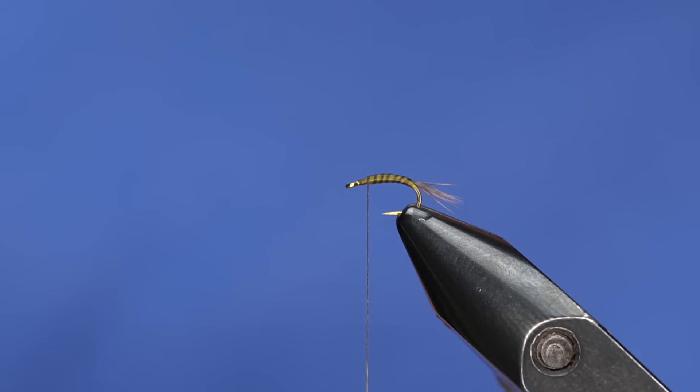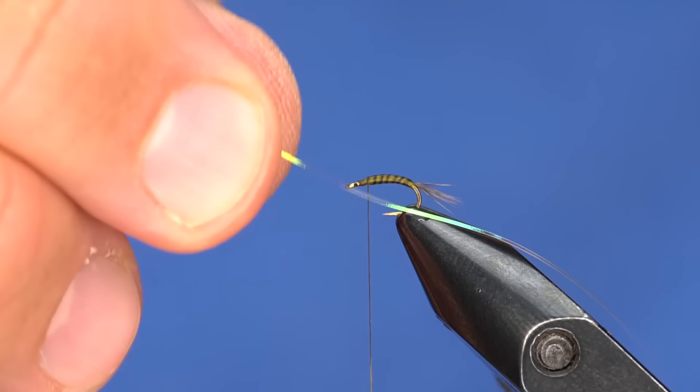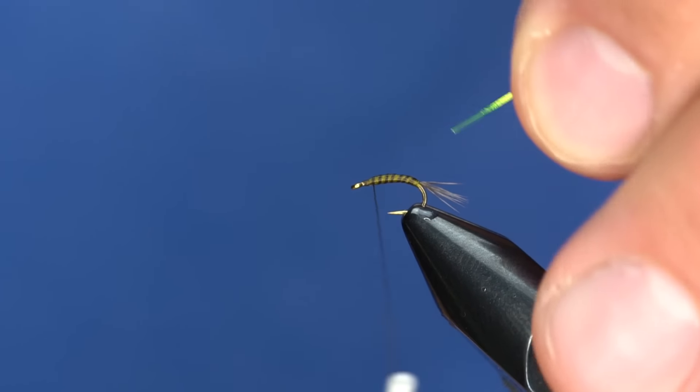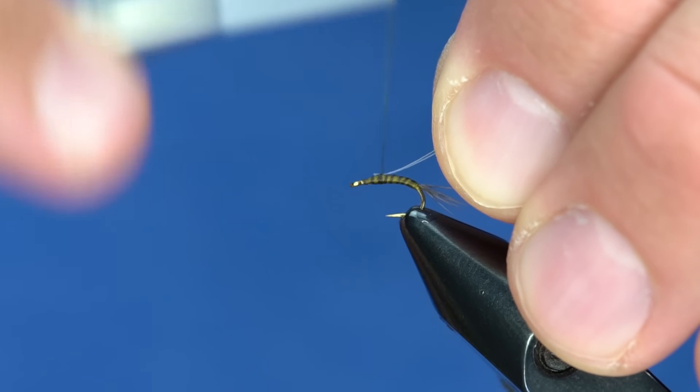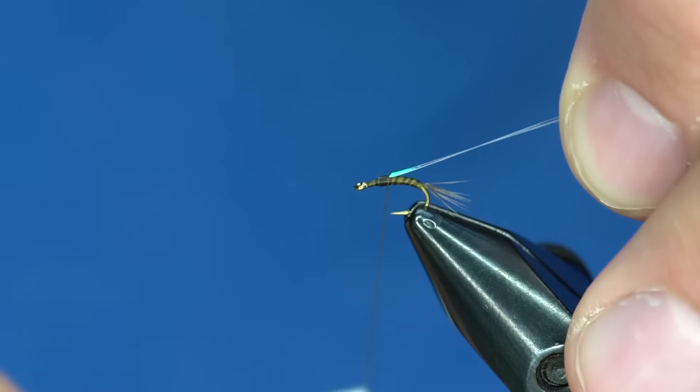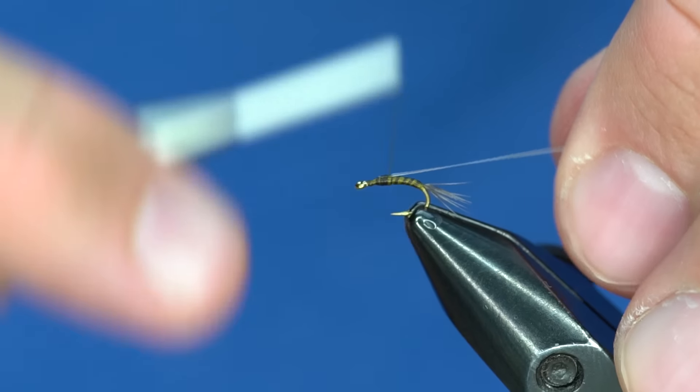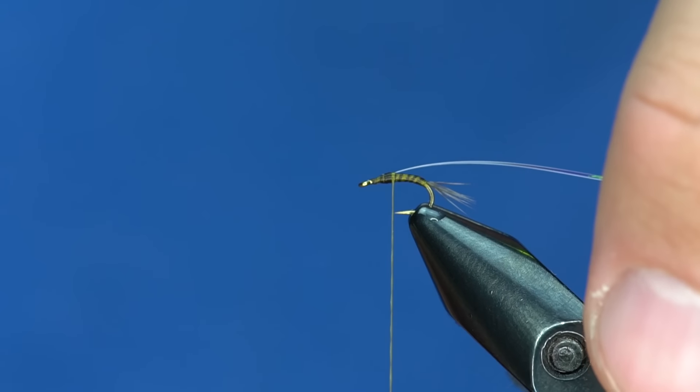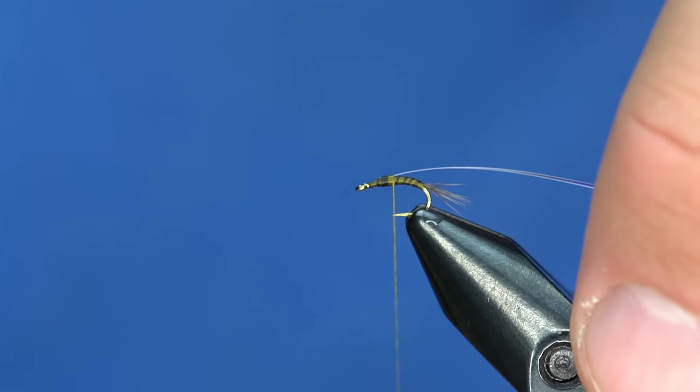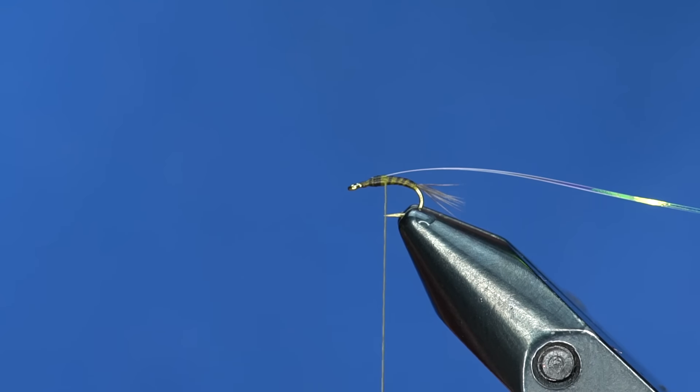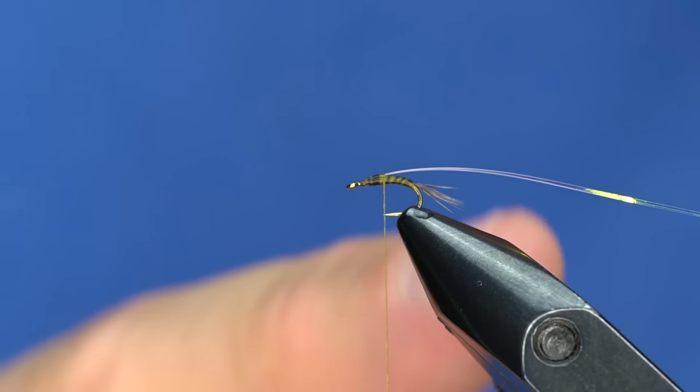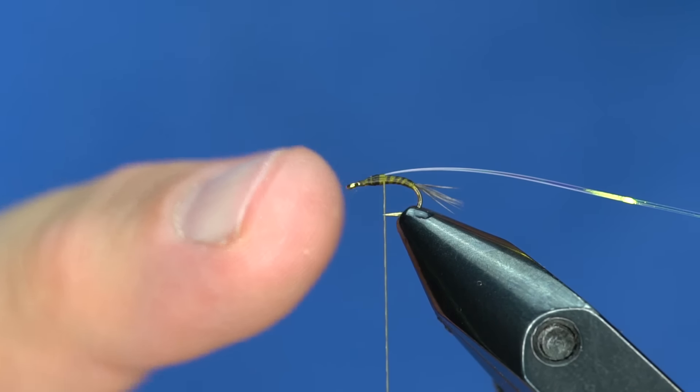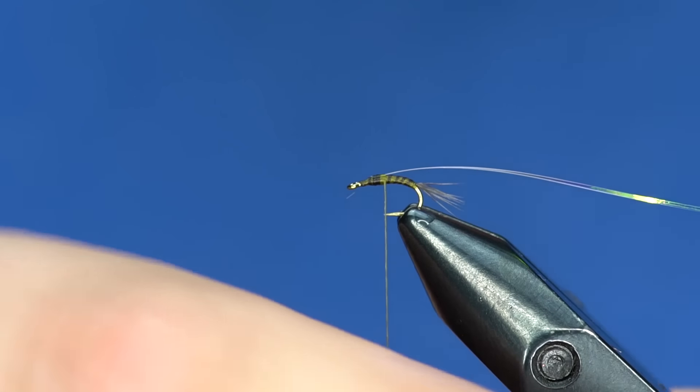The next step is, we're just going to take a little piece of opalescent, like, mirage tinsel. This is going to be flashback for the wing case. You don't have to do this, you don't have to put flash on it if you want, just a natural hatch matching pattern. This hook is also really cool. I know that my wing case is back as far as it's supposed to go because my thread hangs down and is right at the hook point. That's right where I want to start that wing case.